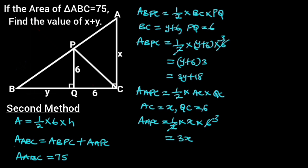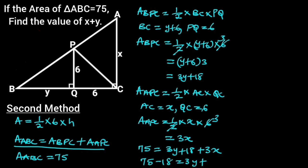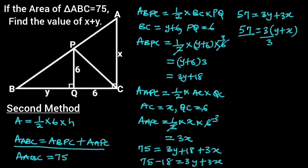Plugging the area of each triangle into the formula: 75 equals 3Y plus 18 plus 3X. Subtracting 18 from both sides: 75 minus 18 equals 3Y plus 3X, so 57 equals 3Y plus 3X. Factoring out 3 on the right side: 57 equals 3 times (Y plus X). Dividing through by 3 gives us X plus Y equals 19.